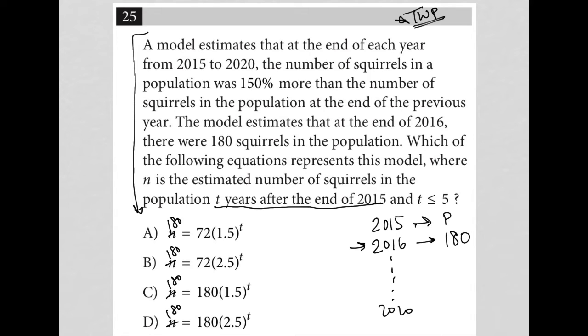Oh okay, well that means in 2016, T would equal one, right? We're one year after the end of 2015. So when T equals one, I want my N to be 180.